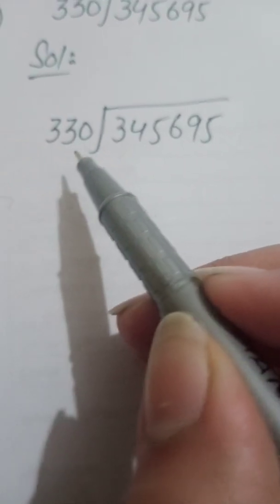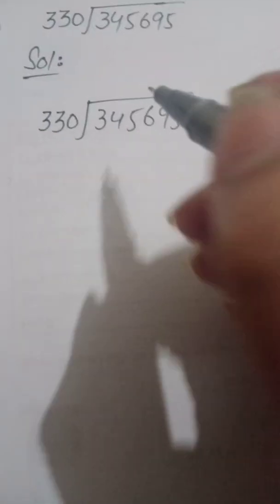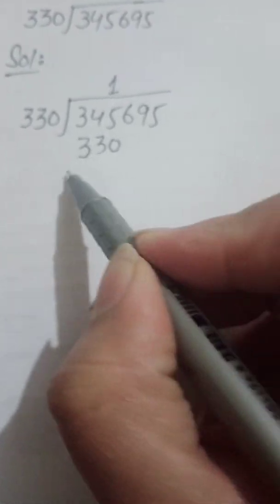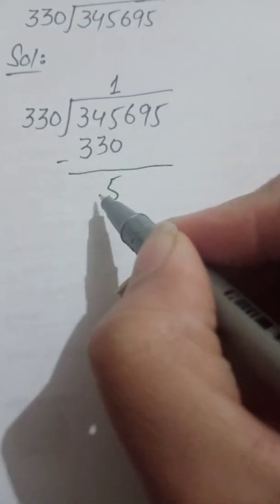330 goes into 345 one time, because if it is 2 times it will be too much bigger than 345. So 330 multiplied by 1 is 330. We put 1 in the quotient and write the product 330 below. Then we subtract: 5 minus 0 is 5, 4 minus 3 is 1, 3 minus 3 is 0. The difference is 15.